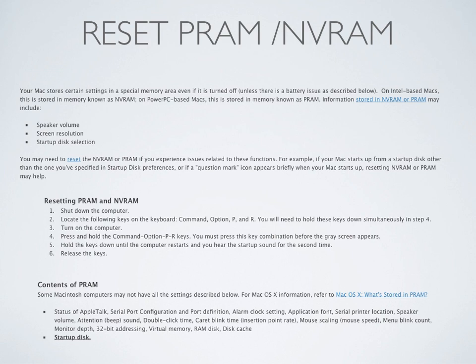To reset the PRAM and NVRAM, shut down the computer and locate the following keys on the keyboard: Command, Option, P, and R. You'll need to hold these keys down simultaneously. Turn on the computer, then quickly press and hold Command, Option, P, and R. You must press this key combination before the gray screen appears. Hold the keys down until the computer restarts and you hear the startup sound for the second time, then release the keys.